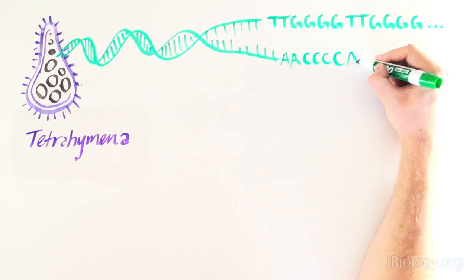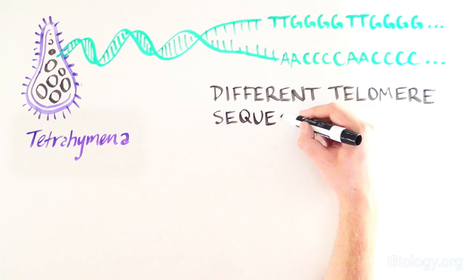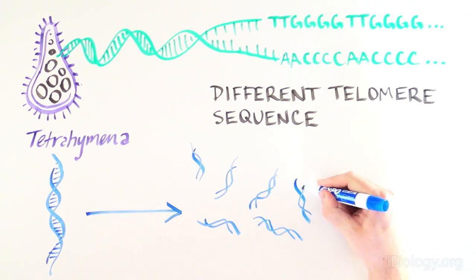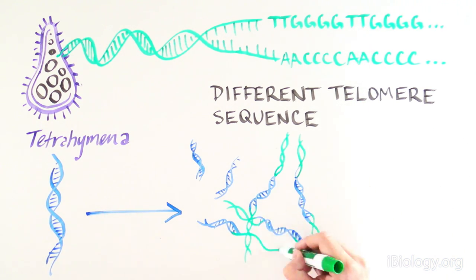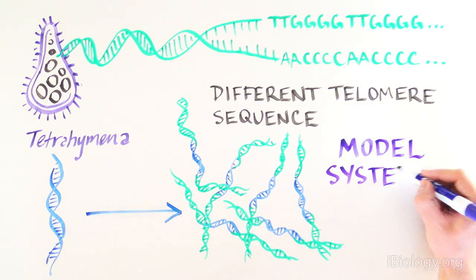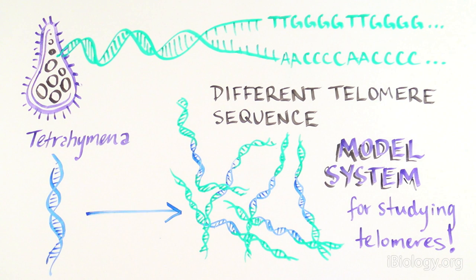However, its telomere sequence is a little different. TTGGGG instead of TTAGGG repeats. This organism undergoes a stage in development where it breaks up its DNA into hundreds of small pieces, and each piece of DNA gets its own telomere at both ends. So this was a great system to study how telomeres are established and maintained, since it seemed to happen rapidly and synchronously in tetrahymena, and like in other organisms.